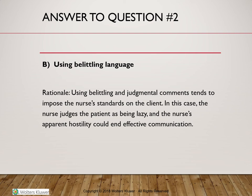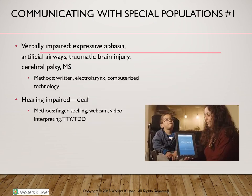Let's discuss communicating with special populations. The Joint Commission mandates that healthcare providers facilitate communication with all clients by requiring agencies to have systems providing auxiliary aids and services for clients with hearing, visual, or speech impairment, as well as literacy needs. Facilities must also provide language interpreting and translation services for clients who do not speak English or have limited English proficiency.